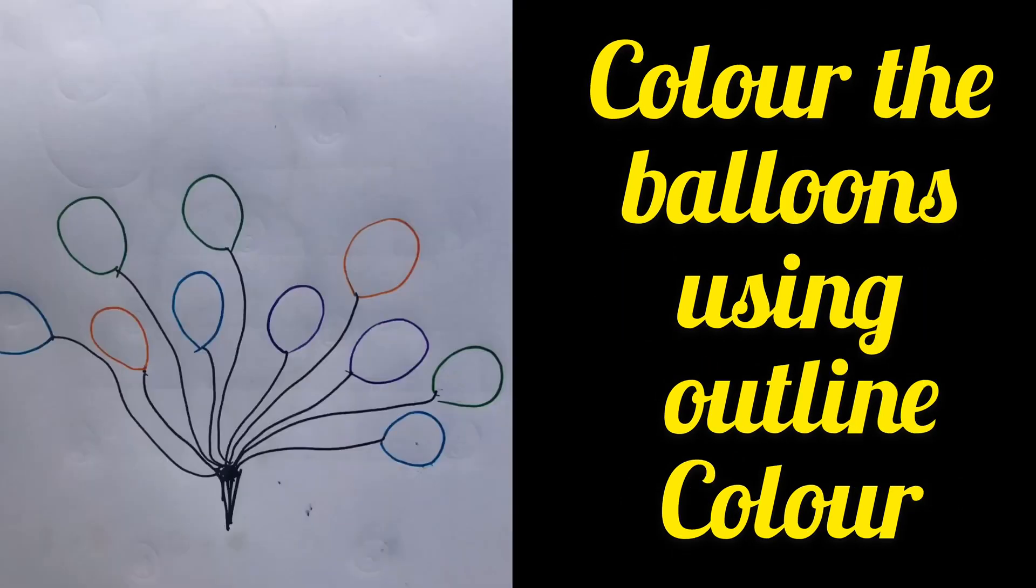And for the last worksheet, I've kept it a little simpler. There are some balloons with outline color. The kid is going to identify which color is it and color the balloon using the same color.